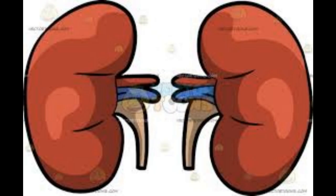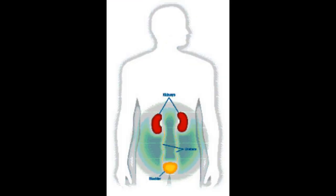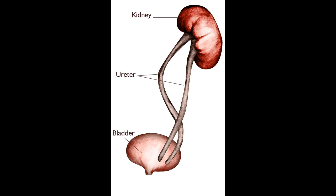Now we'll see the structure of the excretory system in the human body. The reddish-brown bean-shaped structures located on the back side of the body, left and right to the backbone above the waist, are called kidneys. These structures filter the nitrogenous wastes from blood and remove them as urine. A pair of ureters are present in humans.